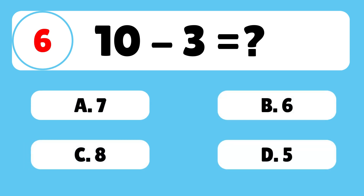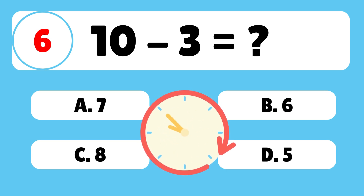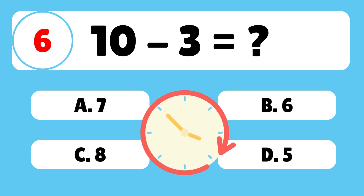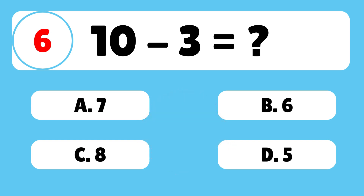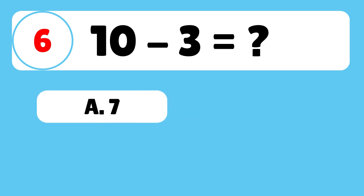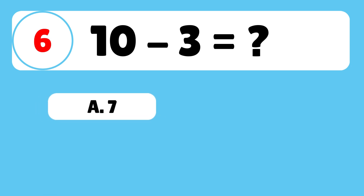Question 6: What is 10 minus 3? The answer is A. 10 minus 3 is equal to 7. Fantastic!